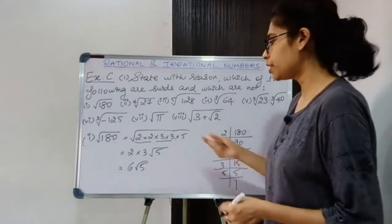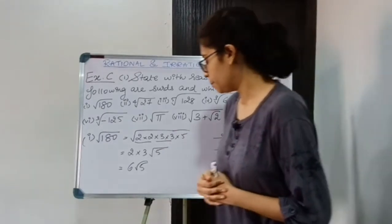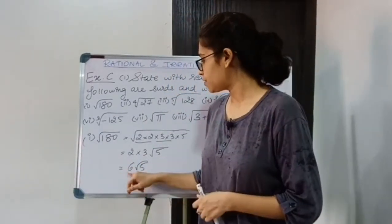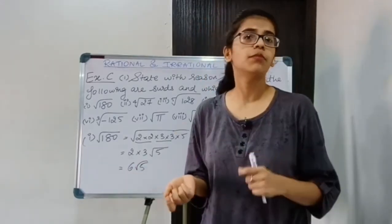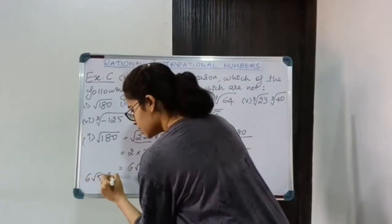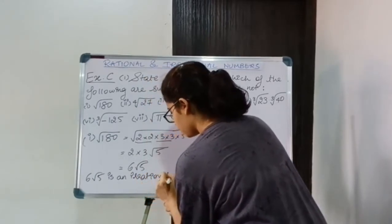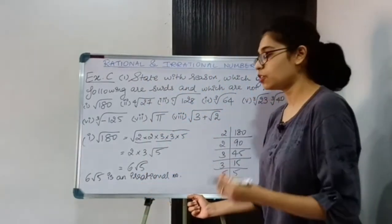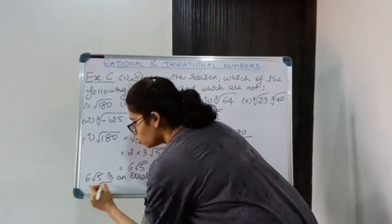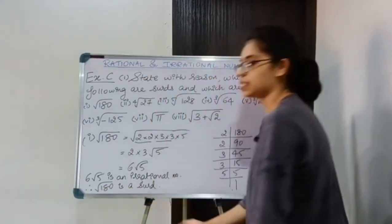I am assuming that you all know how to find the roots. Now 6√5 is an irrational number. Inside the root there is a rational number. So yes, it is a surd. The definition: if the root of a rational number gives you an irrational value, then it is a surd. Therefore, √180 is a surd.